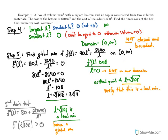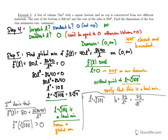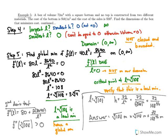The problem asks for the dimensions of the box. L = ∛108 meters. Finding H: H = 72/L² = 72/(108)^(2/3) meters. The box dimensions are ∛108 m × ∛108 m × 72/(108)^(2/3) m — with the square base having side length ∛108 and height 72/(108)^(2/3).